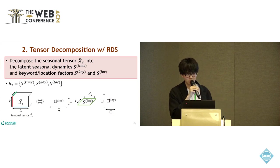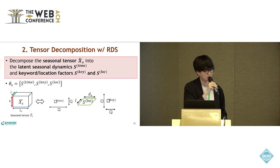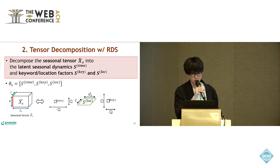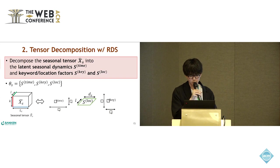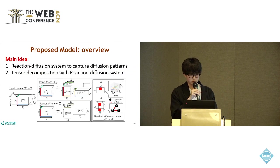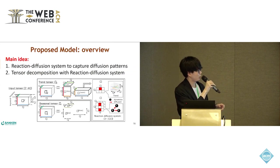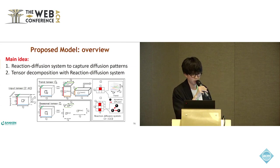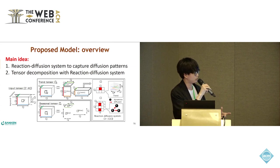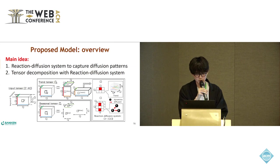The seasonal tensor is similarly decomposed into latent seasonal dynamics in two factors. This is the overview of our model. The input tensor is reconstructed by two tensors: a trend tensor and a seasonal tensor. Each tensor is decomposed into latent dynamics in two factors, and the latent dynamics are generated from the reaction-diffusion system.